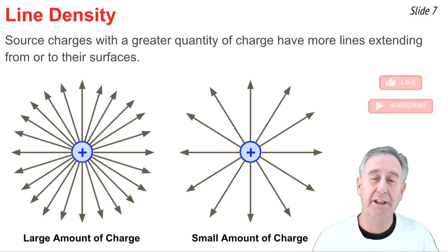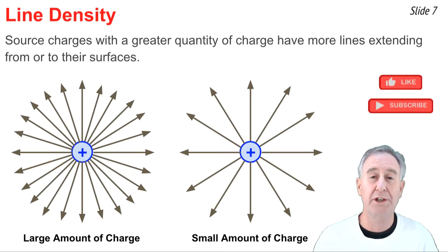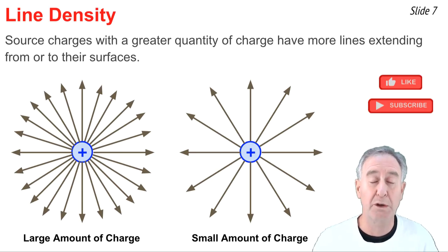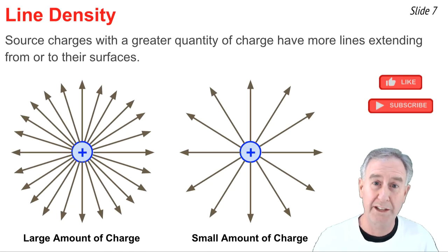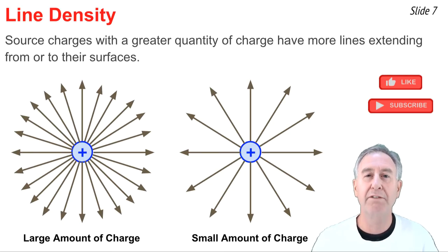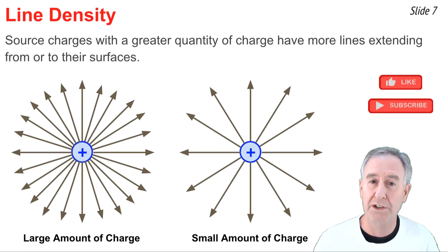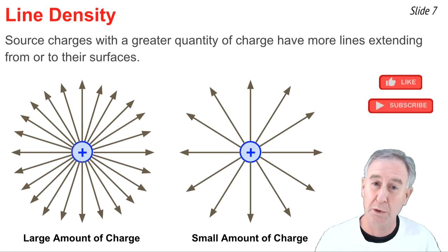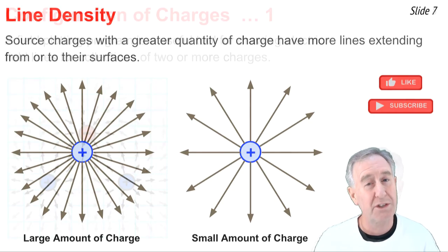The density of the electric field lines in any given location on an electric field line diagram tells us information about the relative electric field at that particular location. Where the lines are more dense, the electric field is of greater magnitude. Electric field line density also tells us something about the quantity of charge on the source — whenever you have a greater quantity of charge on a source, you draw more electric field lines from or towards that particular source charge's surface.